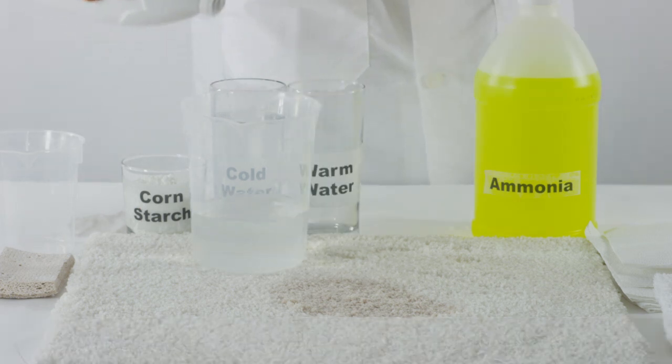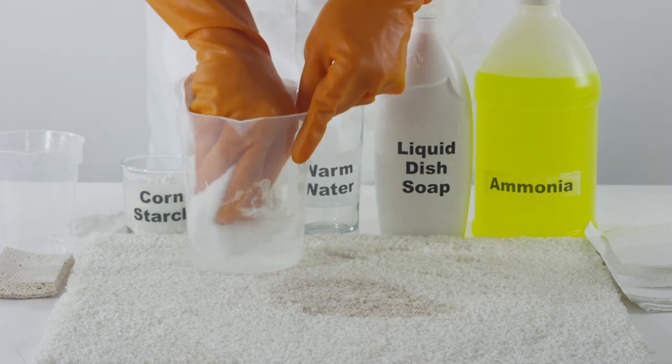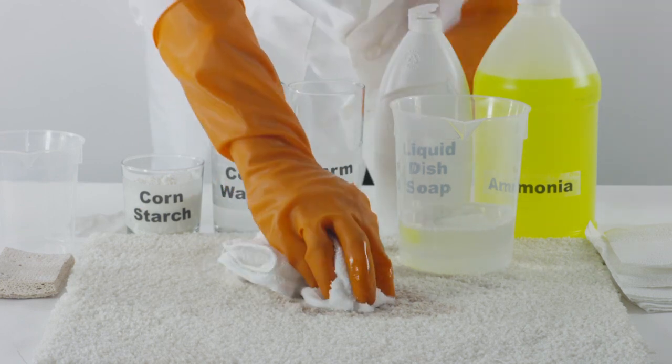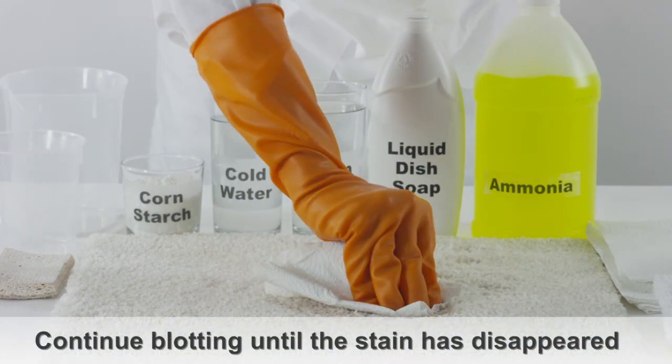Take a damp white cloth and moisten it with this solution. Use the cloth to soak up any remaining milk from the affected area of the carpet. Continue blotting until the stain has disappeared.